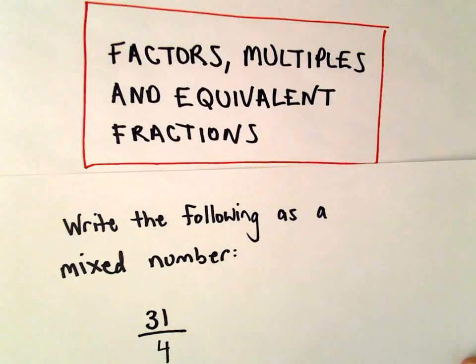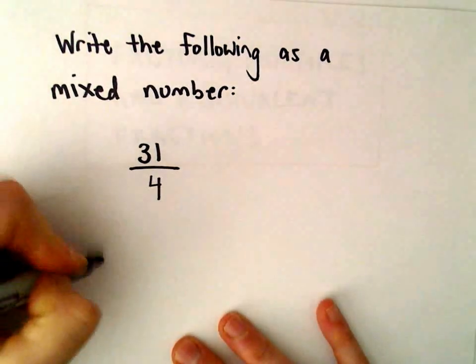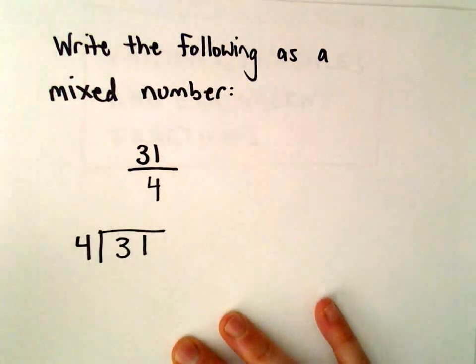All right here, we're gonna look at some mixed numbers and what we're gonna do is we're gonna write the number 31 divided by 4 as a mixed number. So to do this, I'm just gonna write it as long division. We've got 31 divided by 4.